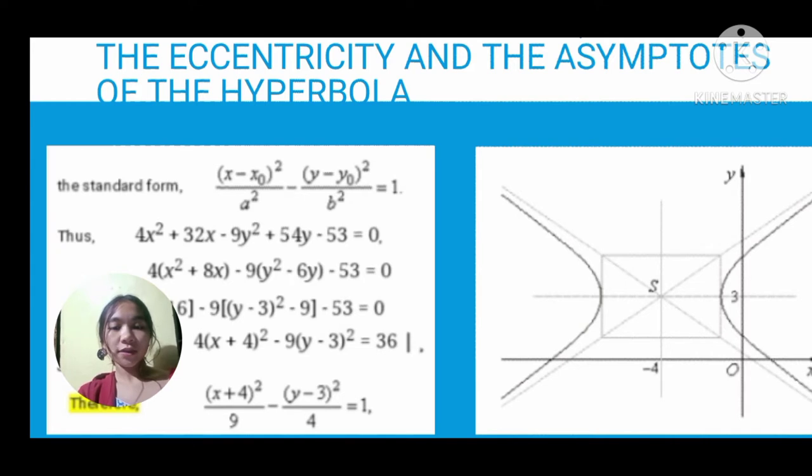Example number one: the hyperbola is given by the equation 4x² - 9y² + 32x + 54y - 53 = 0.